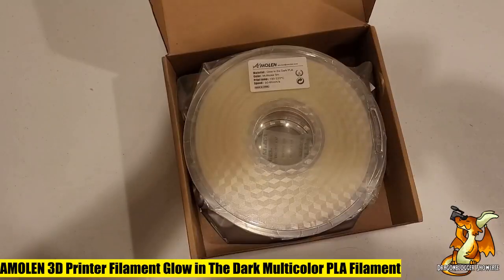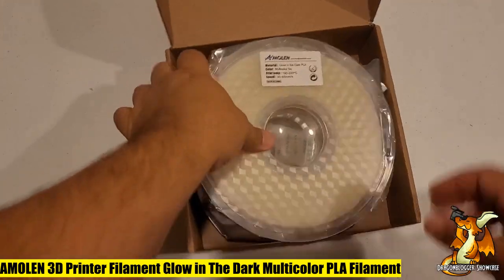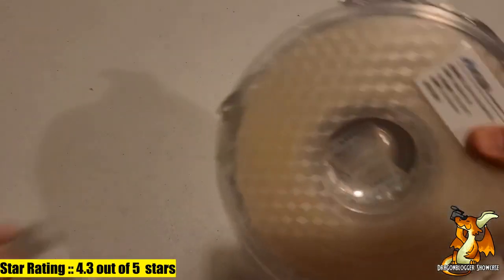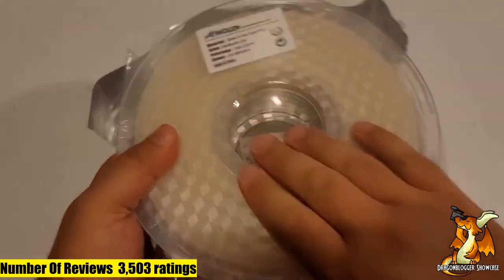Number two: Amelin 3D Printer Filament Glow in the Dark Multicolor PLA Filament. Every 10 meters the color changes with green, blue, purple, and pink.